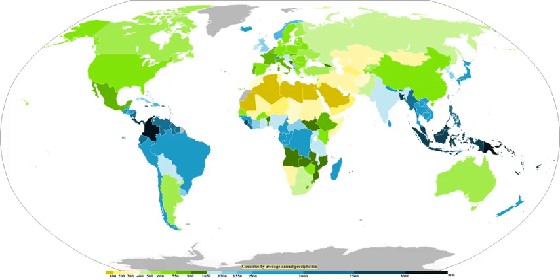For those looking to measure rainfall most inexpensively, a cylindrical can with straight sides will act as a rain gauge if left out in the open, but its accuracy will depend on what ruler is used. Any of the above rain gauges can be made at home. When a precipitation measurement is made, various networks exist across the United States and elsewhere where rainfall measurements can be submitted through the internet, such as CoCoRaHS or Globe. If a network is not available in the area where one lives, the nearest local weather office will likely be interested in the measurement.